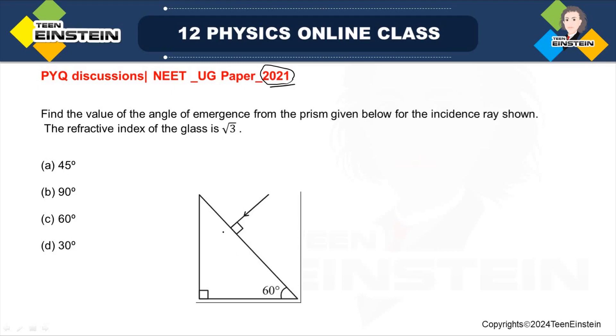As you see from the figure, this is the triangular prism, this is actually the refracting surface, refracting face also you can say. This angle is 90 degree and the incidence ray is normal to the refracting surface. And as we know, when a ray incidents normally on the refracting surface, it will pass through the surface without any deviation.